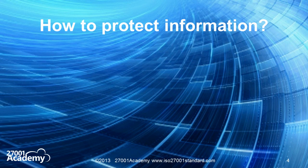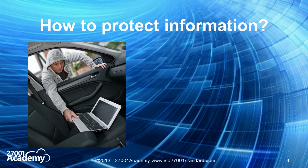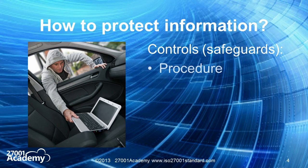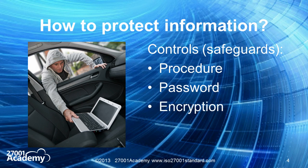Let me use my favorite example. Let's say you leave your laptop frequently in your car. Chances are, sooner or later, it will get stolen. So what can you do to decrease the risk to your information? You have to apply some controls or safeguards. First of all, you can write a procedure which defines that you cannot leave the laptop in your car. Also, you can protect your laptop with a password, so if it gets stolen it will be more difficult for someone to access your information.